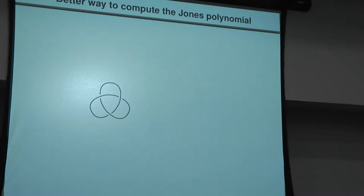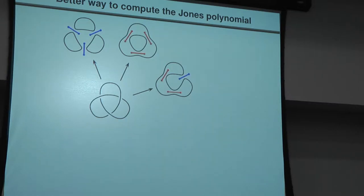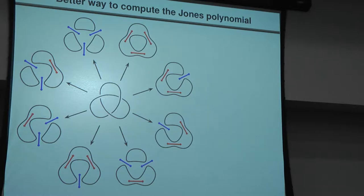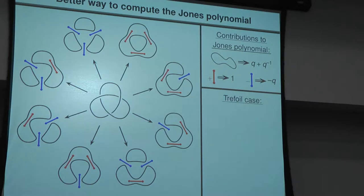Let's look at an example. We start with a diagram of a knot — the trefoil, which has three crossings. We can resolve all of them. Each crossing can be resolved positively or negatively. We encode how we do it by means of two kinds of markers: positive (red) and negative (blue). There are three crossings, each resolved in two ways, so there are eight resolutions in total. For each resolution, each circle contributes a certain factor; a positive marker contributes one factor, a negative marker another. For each piece you multiply, and for the whole set of resolutions you add.